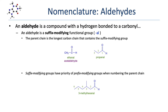Remember that all the other rules for suffix-modifying functional groups apply. For example, suffix-modifying groups have a numbering priority over prefix-modifying groups. So in this example, the carbon chain is numbered starting from the right, because that's the side that's closer to the carbonyl. We see a six-carbon aldehyde with a methyl group on the third carbon, which means this is 3-methylhexanal.